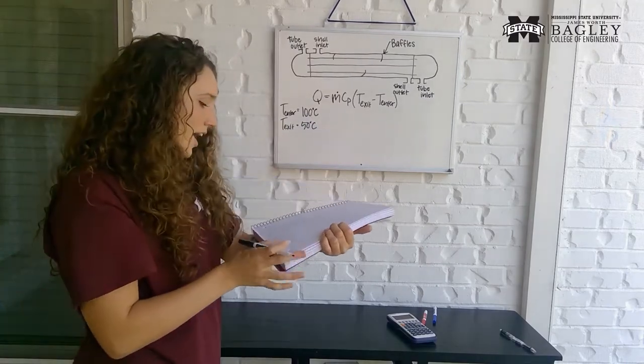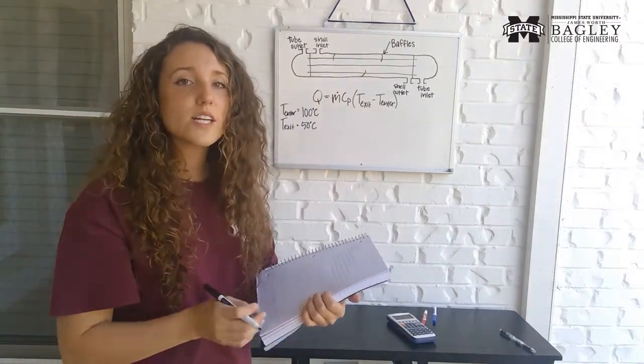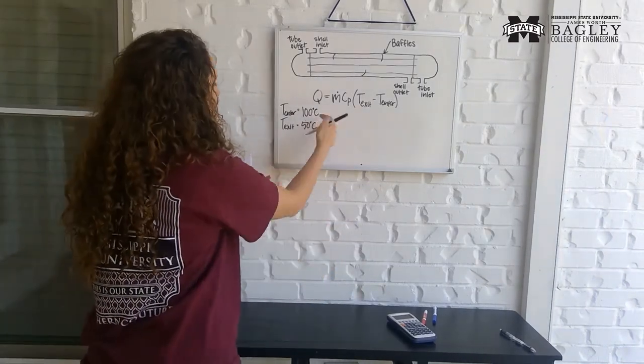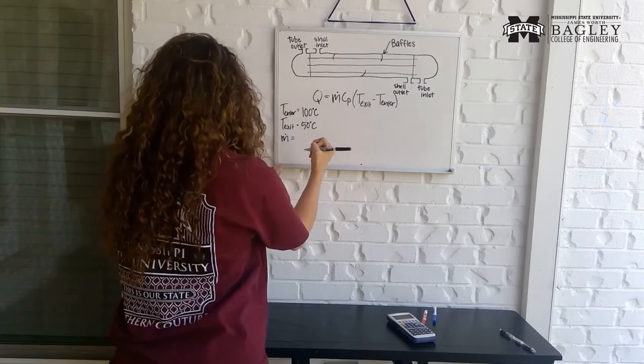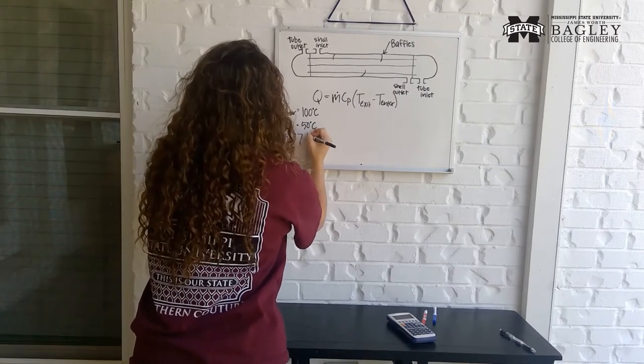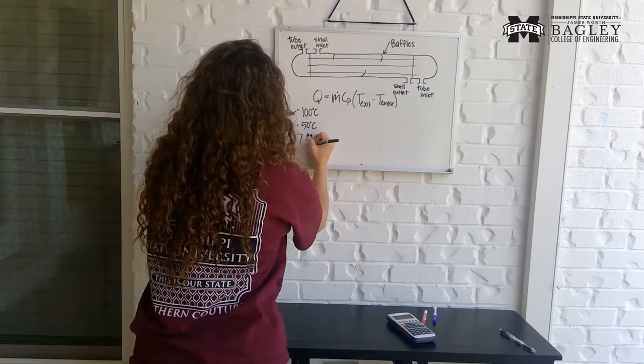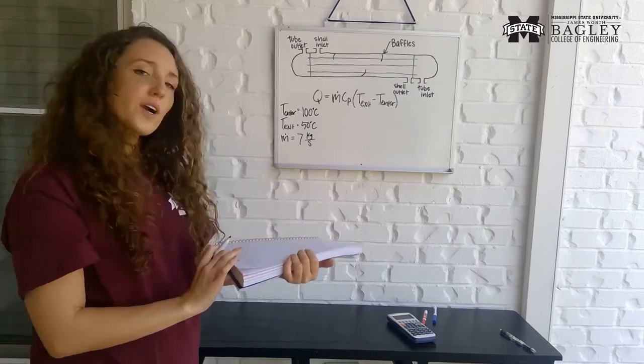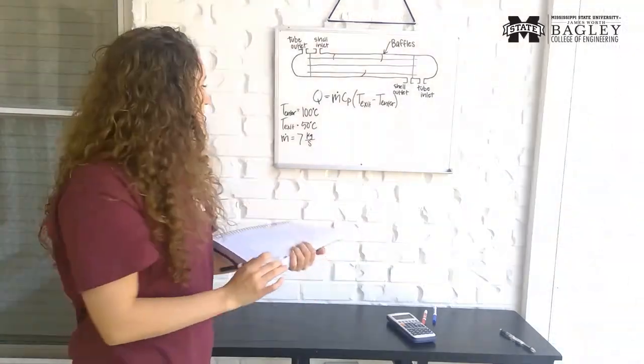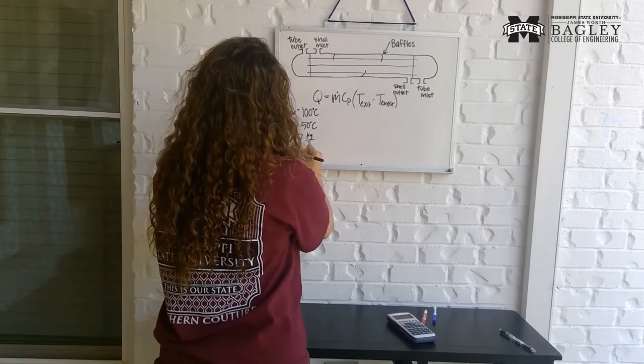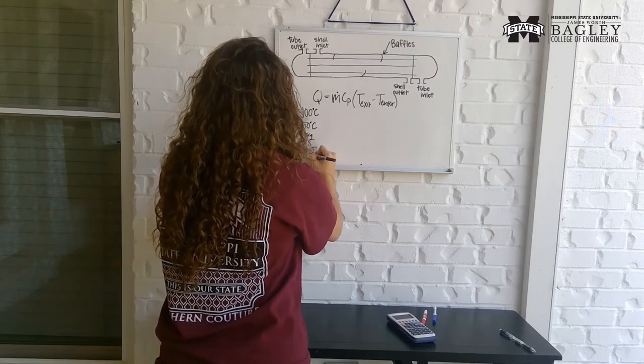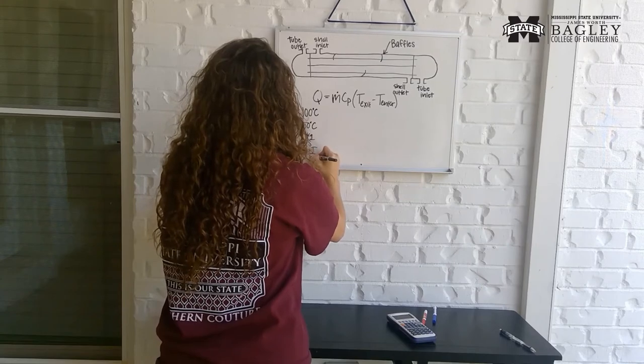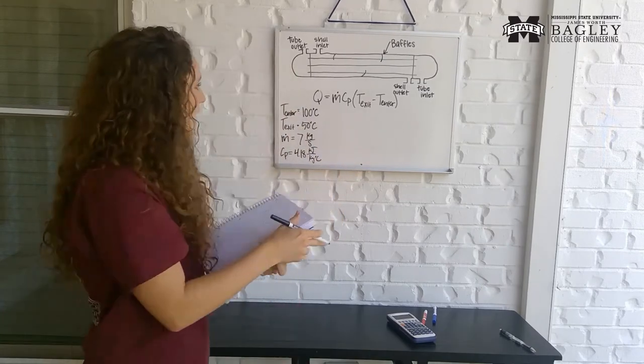At a rate of seven kilograms per second. This is our mass flow or m dot. So the rate of mass flow is seven kilograms per second. And then we're also given a specific heat value. Our specific heat is equal to 4.18 kilojoules per kilogram times degrees Celsius.